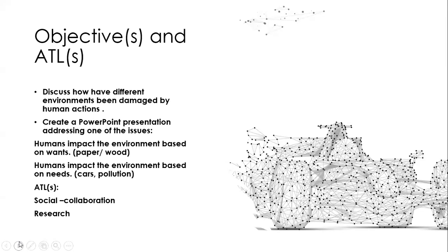I want you to create PowerPoint presentations in groups, addressing one of the issues such as human impact on the environment based on wants — such as paper and wood. We need paper to write on and wood to keep us warm in winter. These are wants; however, needs include things like cars, which are reflective of pollution. You will create a PowerPoint presentation, and I shall guide you through the steps of how to create it. These steps are somewhat reflective of your formative assessment.